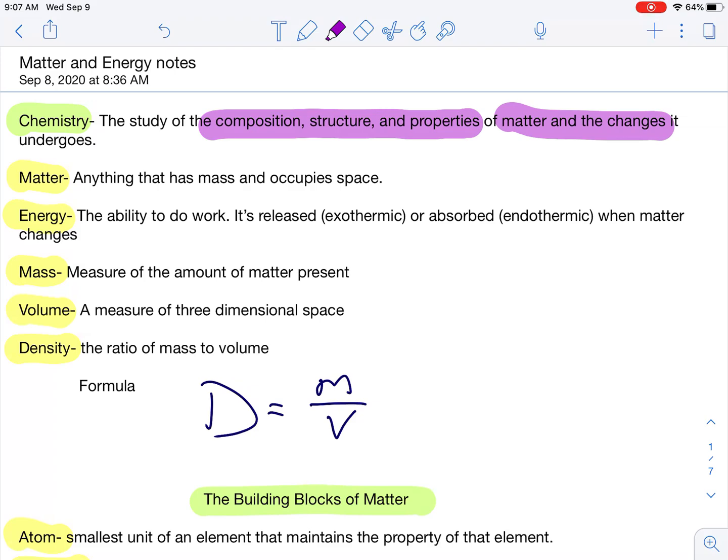Matter, anything that has mass and occupies space. Energy, the ability to do work. In chemistry, we talk about energy being released as exothermic and energy absorbed being endothermic. Whenever matter changes, you always have a change in energy. Whether it's chemical or physical, it does not matter. There's always a change in energy.